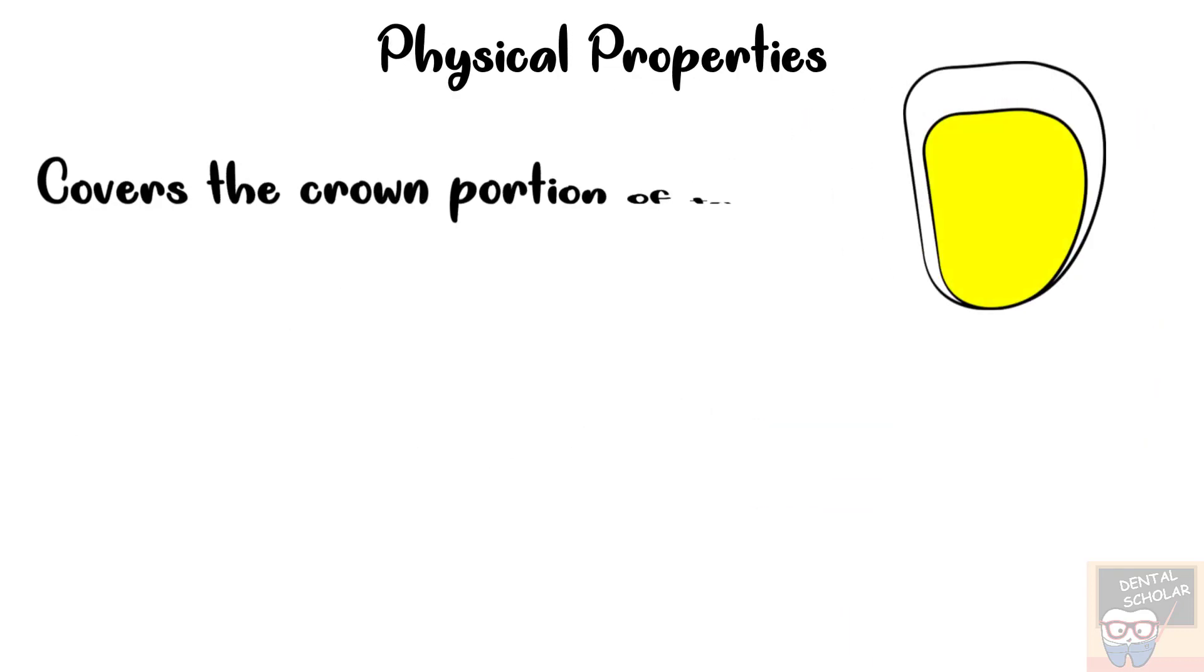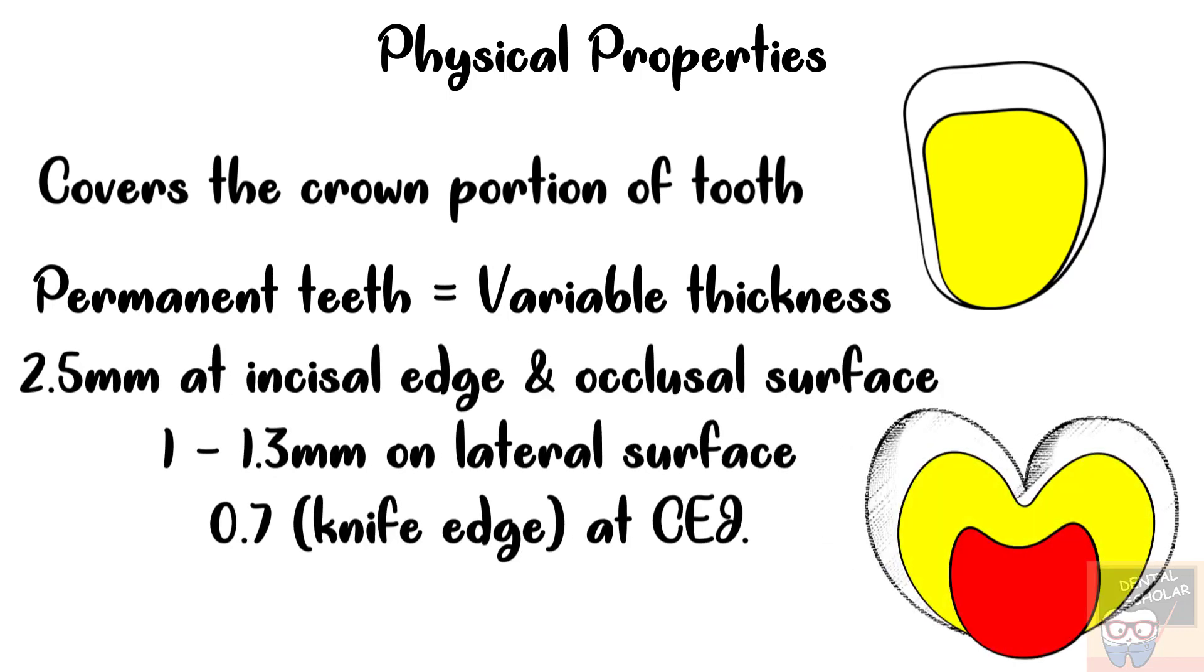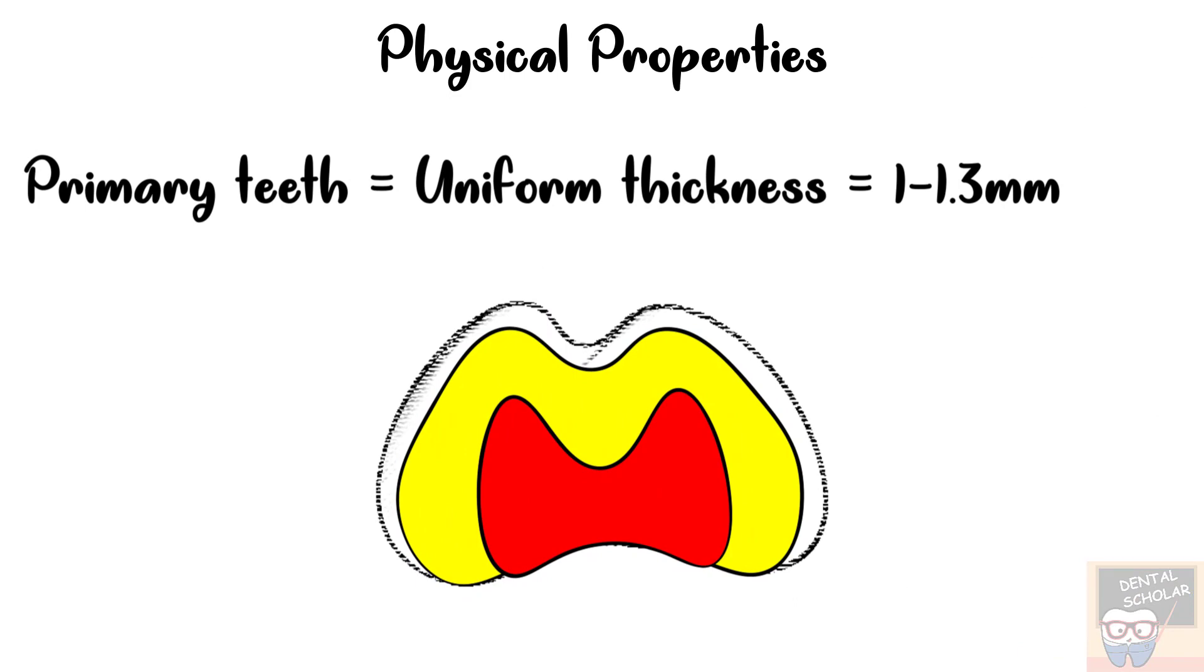Let's now go to the physical properties. Enamel covers the crown portion of the tooth and it has variable thickness in permanent teeth. The thickness is about 2.5 mm at incisal edges and occlusal surfaces, about 1 to 1.3 mm on lateral surfaces and as we go towards cemento-enamel junction or the cervical margin, the thickness reduces to 0.7 mm or you may say that it becomes knife edge. The primary teeth have a uniform thickness of about 1 to 1.3 mm.